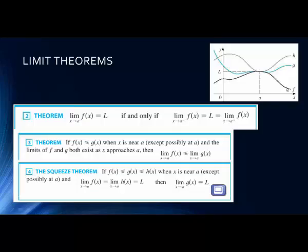This says if f(x) is less than g(x) when x is near a — and both limits exist — then the limit of f(x) will also be less than the limit of g(x). That's pretty intuitive. You can see that visually: f(x) is the lower curve and the blue is g(x), and f(x) is below it. When we're at a, if it was below it, then the limit would also be below it.